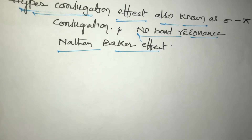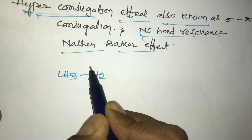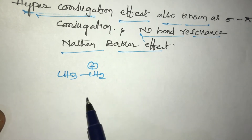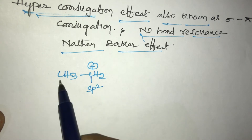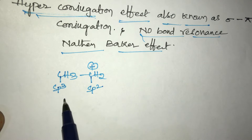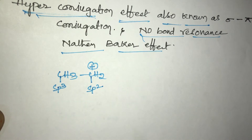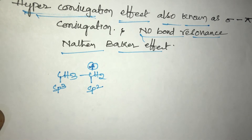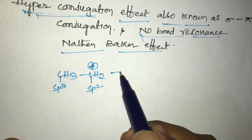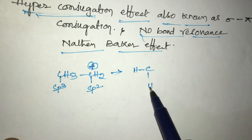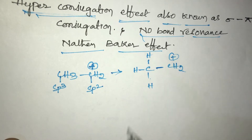Now let's take an example according to hyperconjugation — that is CH3CH2+, the ethyl carbocation. In CH2+, this carbocation carbon undergoes SP2 hybridization, and in the CH3 carbon undergoes SP3 hybridization.